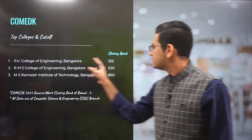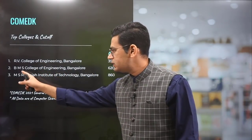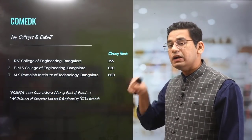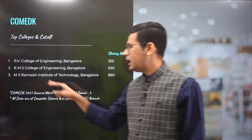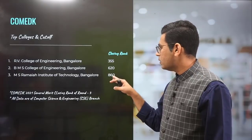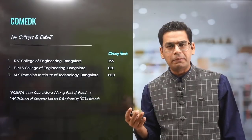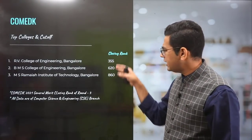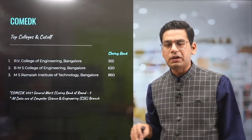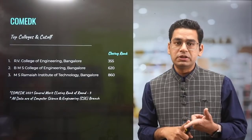RV College of Engineering closes at rank 355. BMS, the second college in Bangalore, closes at 620. MS Ramaiah, also in Bangalore — all 3 are situated in Bangalore — closes at 860 in Round 3. There may be slight change if another round happened after that, but for computer science I don't think there will be much change. All 3 are very famous in South India with very good placements.